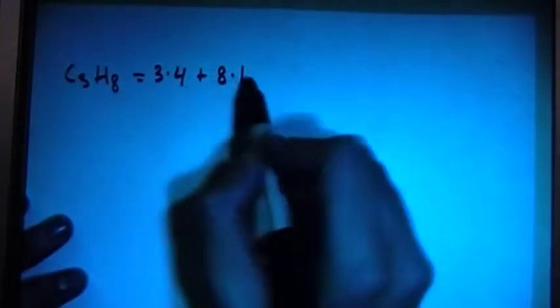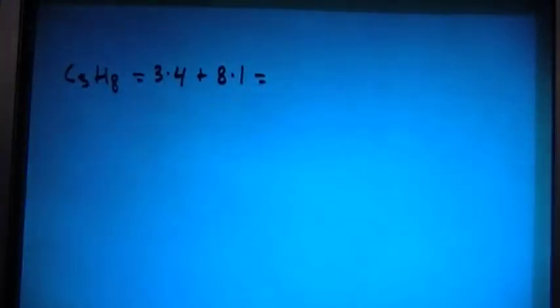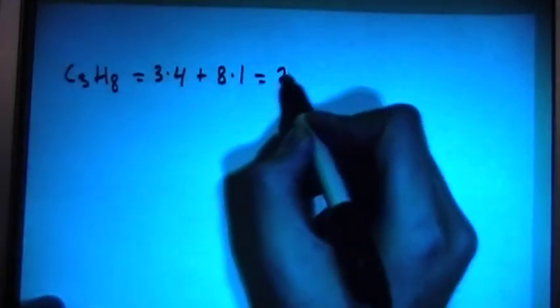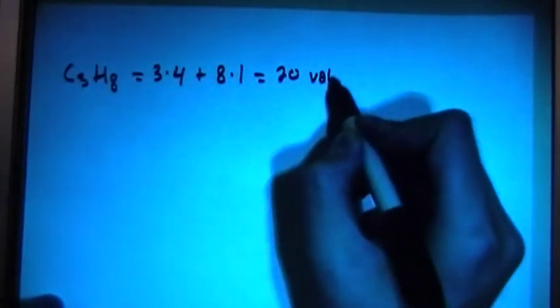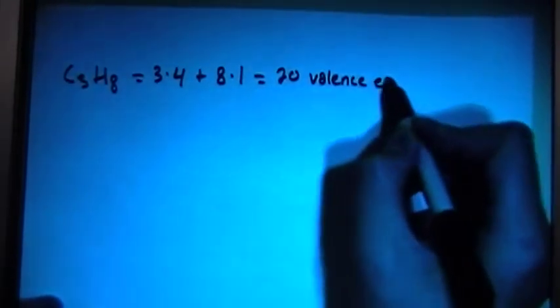So propane has C3H8, that's the chemical formula for propane. And that's going to give us 3 of 4 valence electrons for each carbon, plus 8 times 1 valence electron for each hydrogen. And the total number of electrons in that case will then be 20 valence electrons.